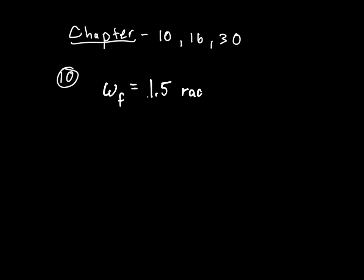Part D is how many revolutions must he do to reach that velocity. And Part C: if he exerts a slowing force of 300 newtons at a radius of 1.35 meters, how long would it take to stop?